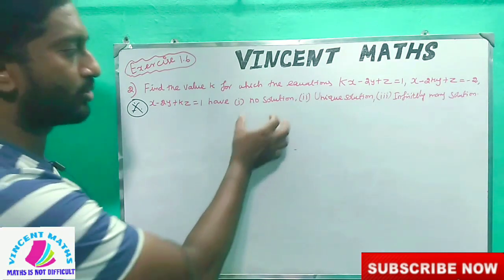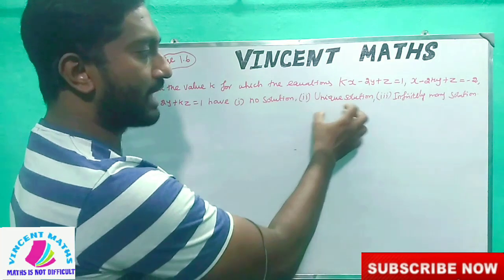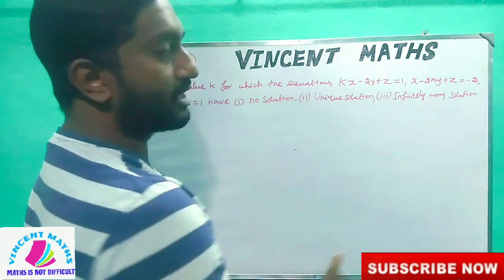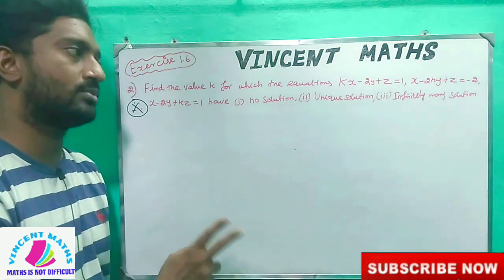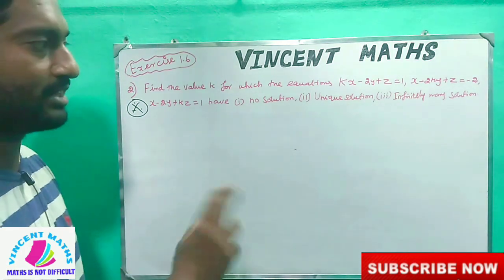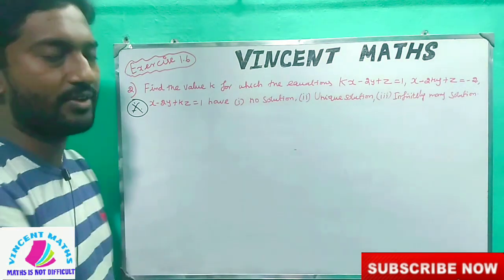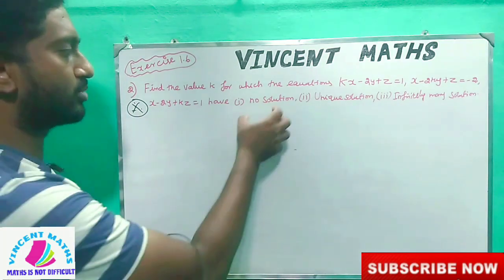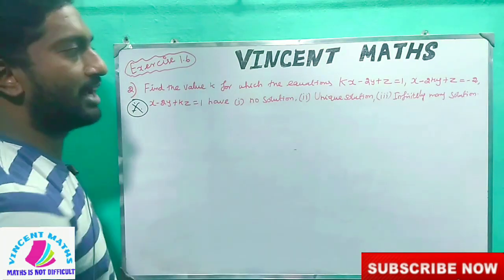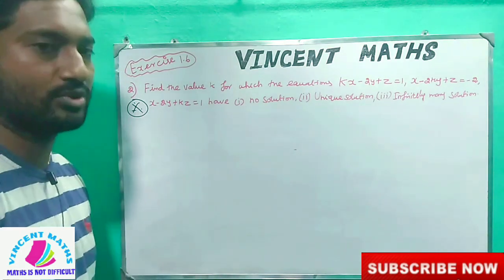If rank of A equals rank of [A|b] equal to 2, that gives a unique solution. If rank of A equals rank 2 but rank of [A|b] equals rank 3, that gives infinitely many solutions — because rank is less than the number of unknowns. So this solution depends on the k value.